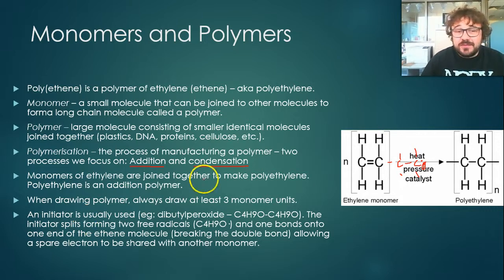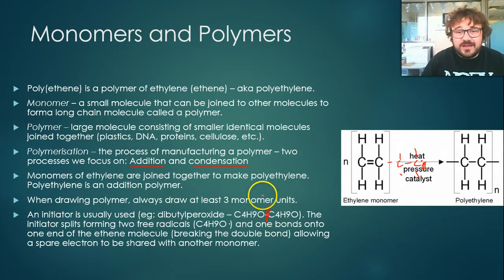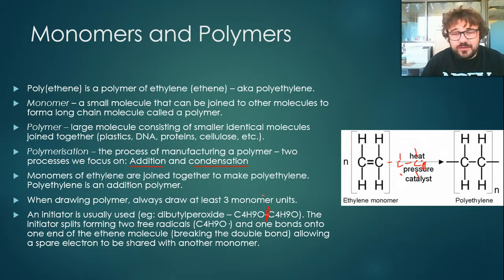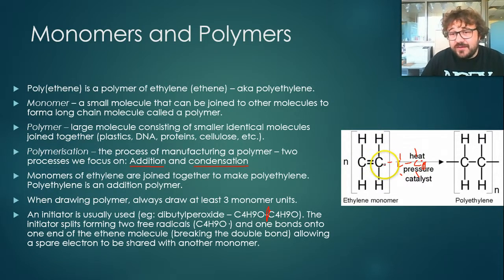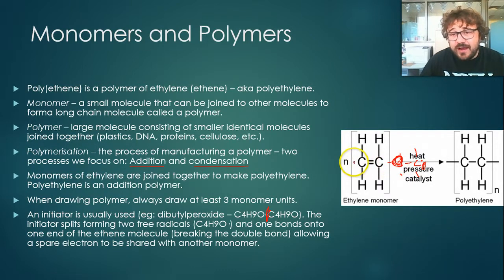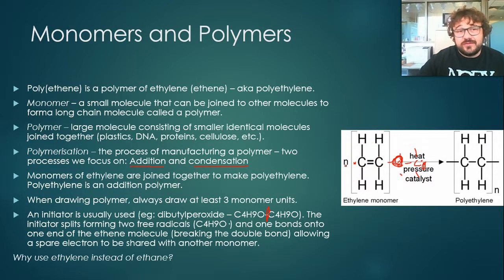The initiator splits to form two free radicals. So it splits and that bond breaks, and you've now got two free radical butyl oxides. Oxygen is super reactive. One of these bonds to the end of the ethylene, it breaks that double bond, and this allows a spare electron — a free radical on that side — and that allows it to join with another monomer, which we'll look at in a minute.